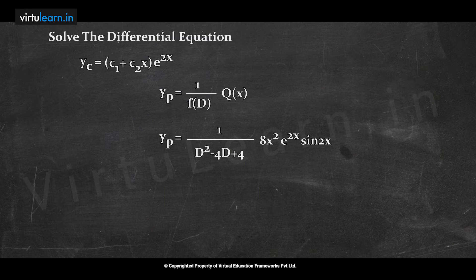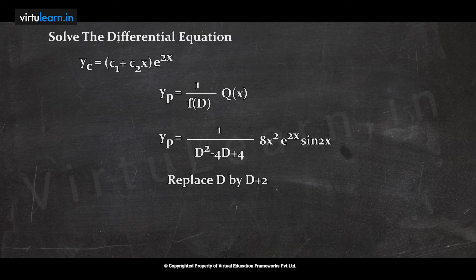Since we observe three functions — algebraic, exponential, and trigonometric — focus on the exponential term first. Using the e^(ax)·v(x) method, write e^(2x) outside the particular integral. When doing so, replace D by (D + a); since the coefficient of x in the exponent is 2, replace D by (D + 2).